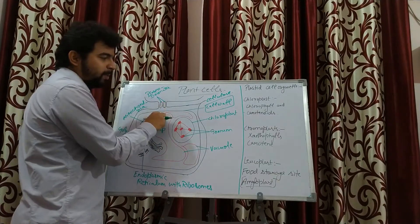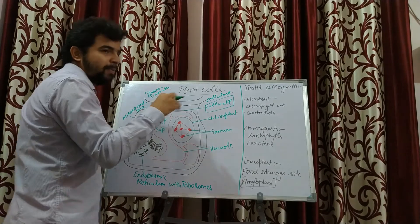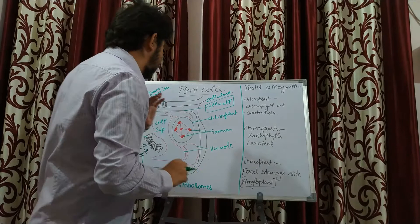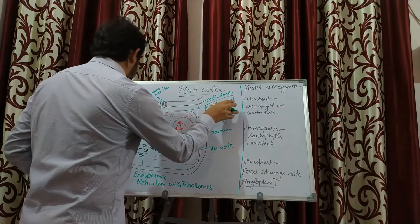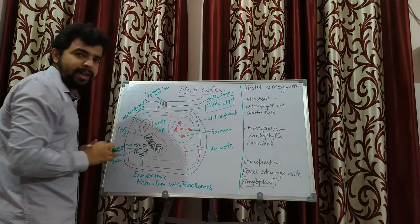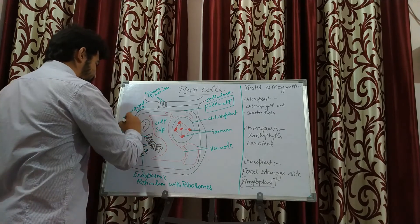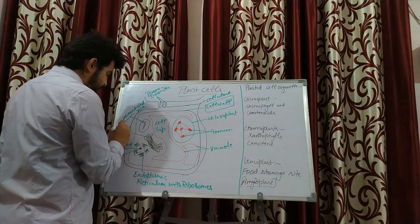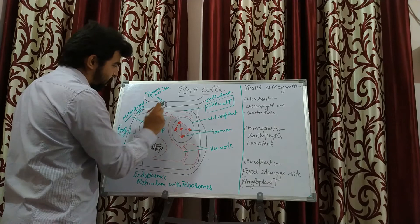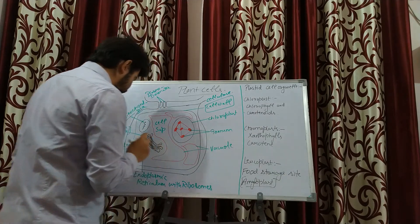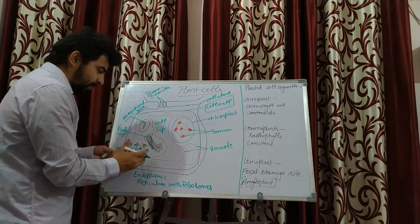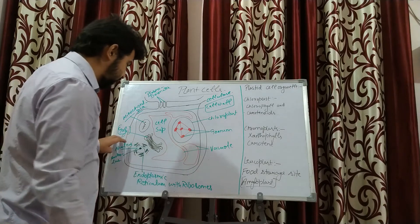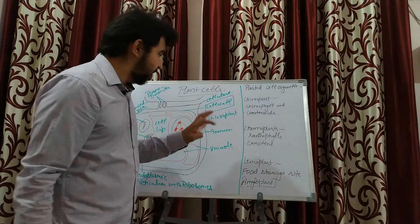After the cell wall, the organelles present in plant cells include mitochondria, Golgi apparatus (here called dictyosomes in plant cells), endoplasmic reticulum with and without ribosomes, and nucleus with nucleolus. Vacuole size is very large in plant cells, containing cell sap, whereas in animal cells vacuoles are very small and less frequent. In plant cells, vacuoles are majorly found.